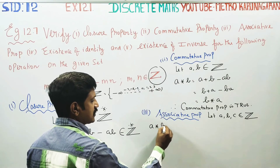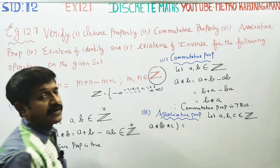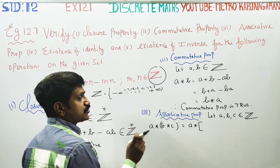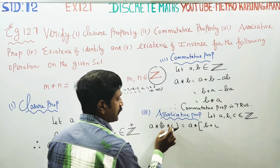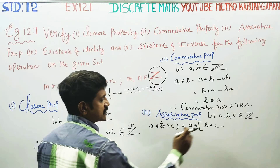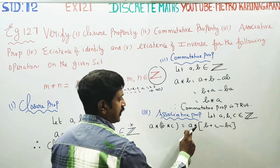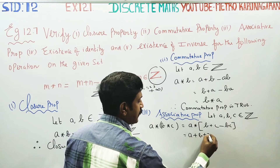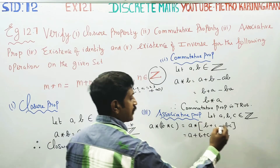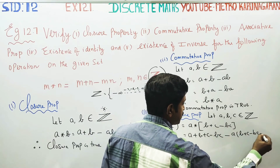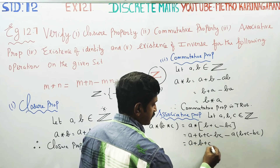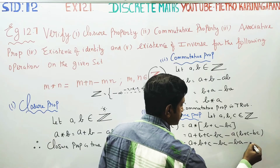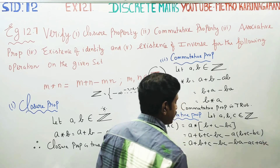The rule for associative property: first compute a star b star c by bracketing the first two. Apply the definition of star: a star b first gives a plus b minus a times b. Then apply star with c to get the result. Expanding gives: a plus b plus c minus bc minus ab minus ac plus abc. This is result number one.